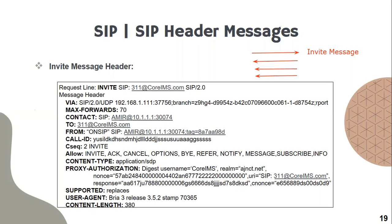If you look at the SIP header, you will find the first thing is the request line, which defines the message type — which this invite message is — as the function of the invite is to invite another customer for a call. We also put in the request line the SIP URI of the person you want to call, which is 311@coreims.com.